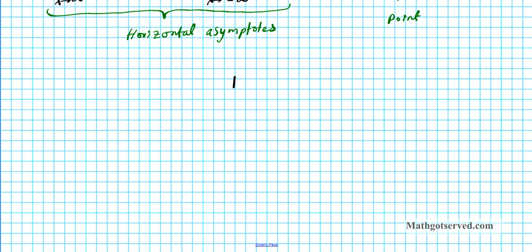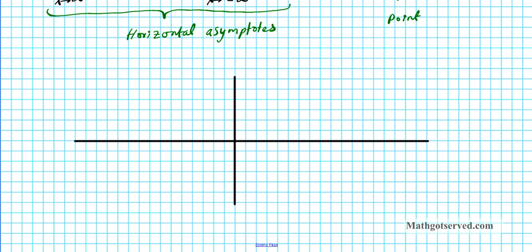Draw your y-axis and then draw your x-axis. We have vertical asymptotes at negative 2 and 3, so let's calibrate: 1, 2, 3 on the positive side, and negative 1 and negative 2 on the other direction. We have two vertical asymptotes — the first one at negative 2 and the other at x equals 3.